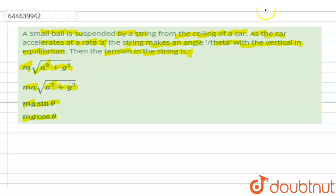Now let me draw the figure first. Let's say this is the car in which we are having a small ball suspended by a string. So now when the car is moving with an acceleration a in this direction, the string makes an angle theta with the vertical. And now we have to find the tension in the string.